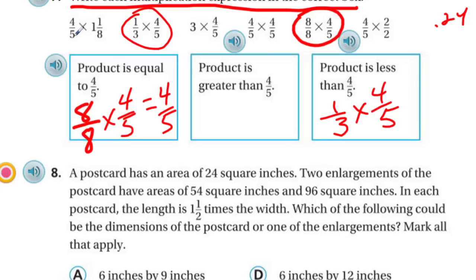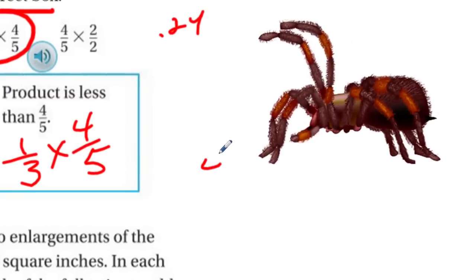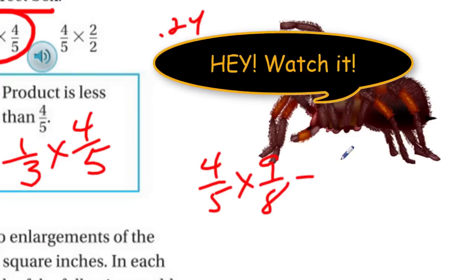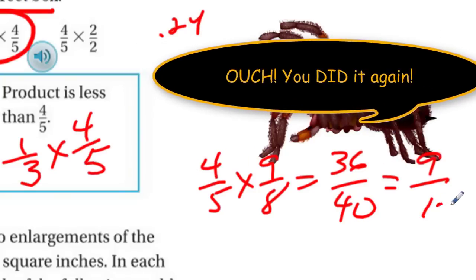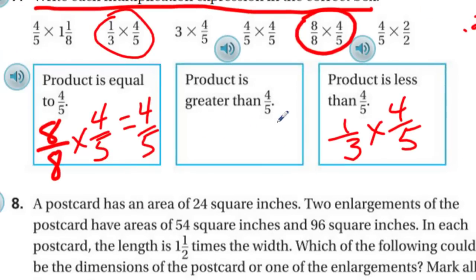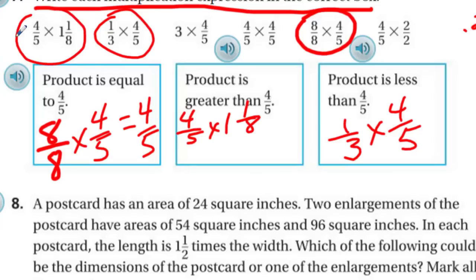In fact, one-third is 0.3 repeating and four-fifths is 0.8, so if you multiply that you end up with 0.24 — a fraction that's even smaller. So product less than four-fifths: one-third times four-fifths would be less than four-fifths. This next one is more than one, so this product here is going to be greater than one. Four-fifths times nine-eighths equals 36 over 40, which simplifies to nine-tenths — that's 0.9, greater than four-fifths. I'll put that one up here. One and one-eighth would go there for that reason.